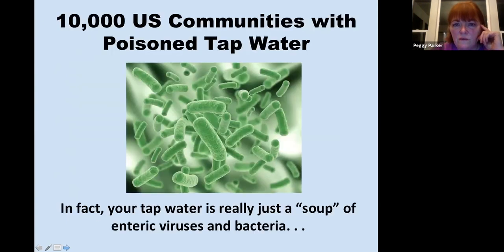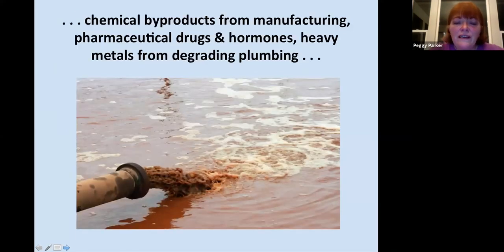10,000 US communities have poison tap water. In fact, your tap water is really just a soup of enteric viruses and bacteria. The word enteric means from your intestinal tract. The reason you have an enteric soup going on in your water is that your drinking water in most cities is recycled sewer water. There will be fresh water added, but they take the sewer water and filter it and clean it and add fresh water back in, and then it goes into the pipes and into your faucet.